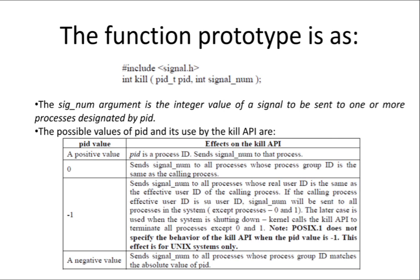If the PID value is 0, the signal number is sent to all processes whose process group ID is the same as the calling process — not to a single process, but to all processes of the group. However, the group ID must be the same as the calling process.